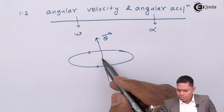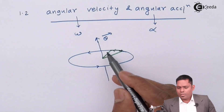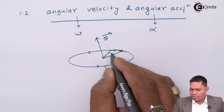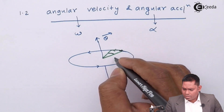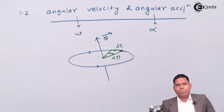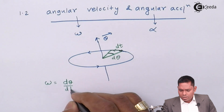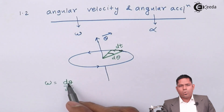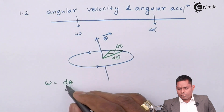If the object moves from this position to this position faster, that means we say the angular velocity is more. This is the angle that is covered. From here to here, the angle is dθ and the time taken is dt. Then omega is defined as dθ over dt. Omega stands for angular velocity, which is dθ over dt — that is the rate of change of angular displacement with time.